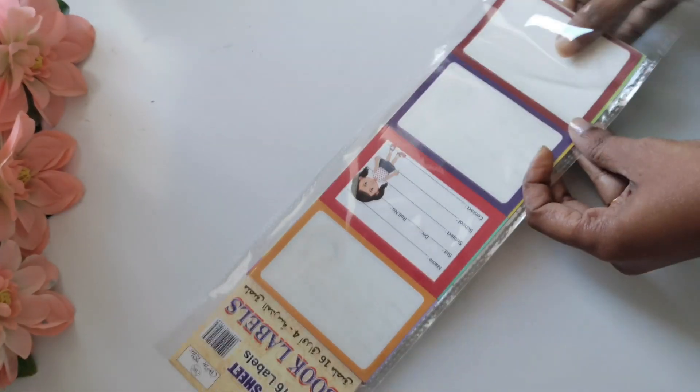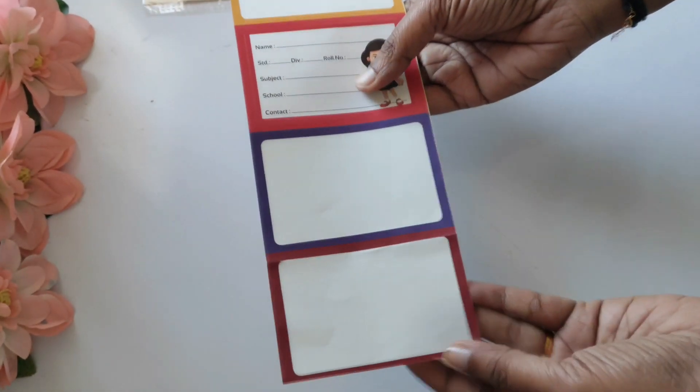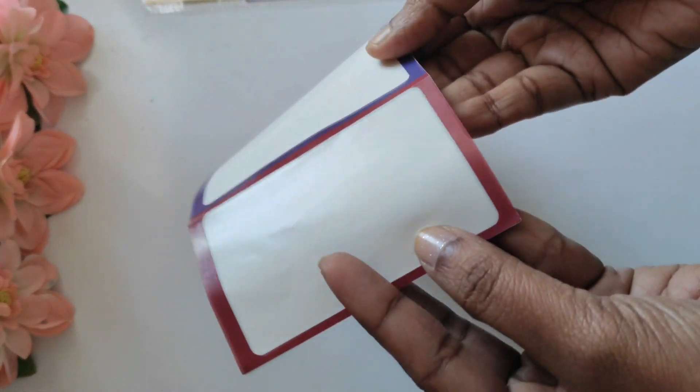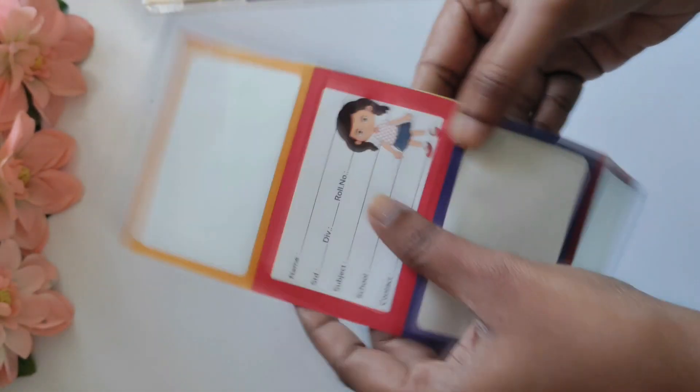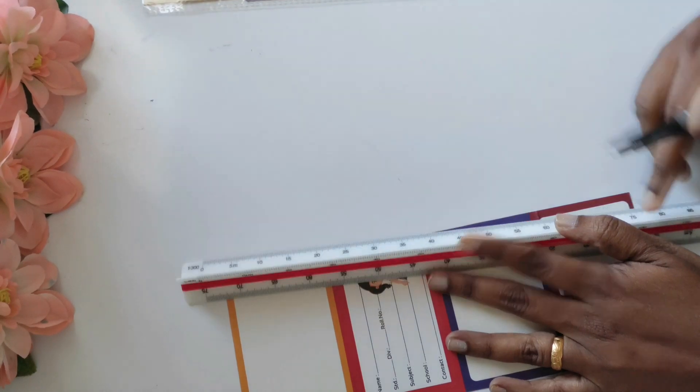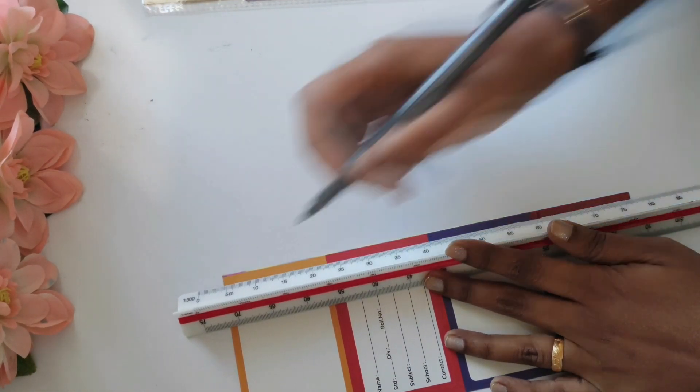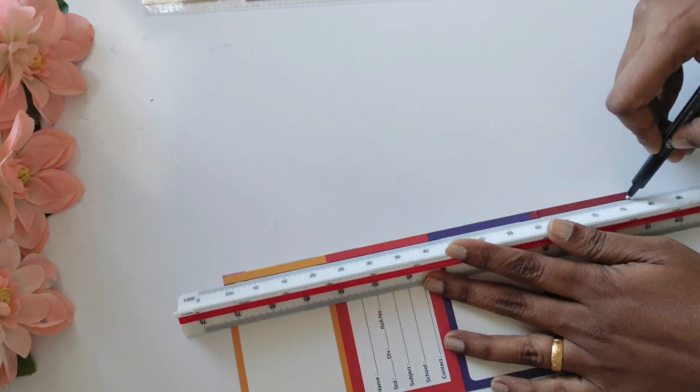For this, I have taken name slips, that is book labels. If you want, you can take the whole book label set as such. But here, since it's a best out of waste idea, I'm making use of the leftover parts. After using the book labels, you are left with some bits and pieces, and I'm going to use those pieces.